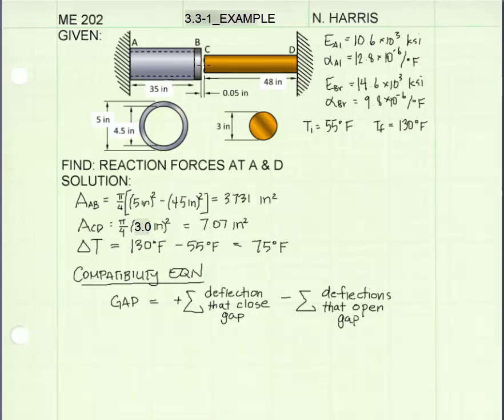But then when they come into contact, they will exert a force on each other. That's going to cause them to want to shrink because they'll both be feeling compression forces. Those forces are going to want to decrease the length of the structure. We need to write a compatibility equation that includes the gap plus these changes, both positive and negative, in the deflections.